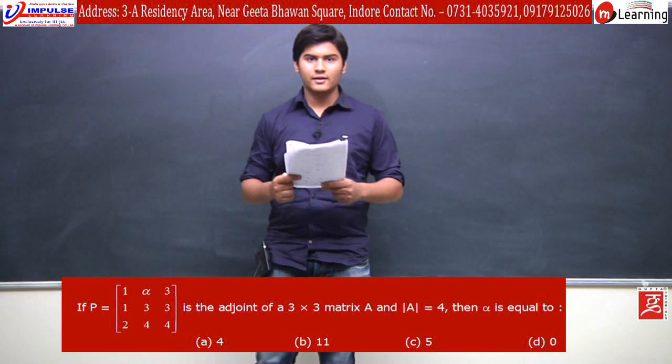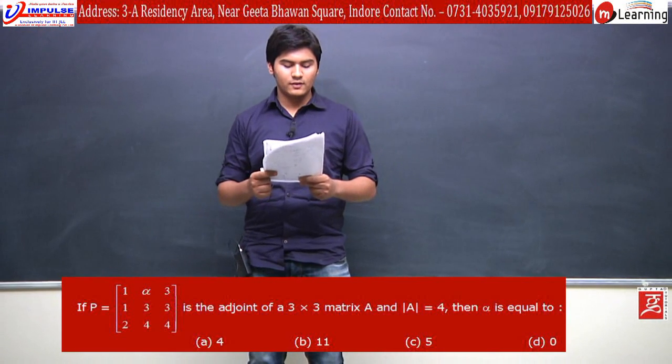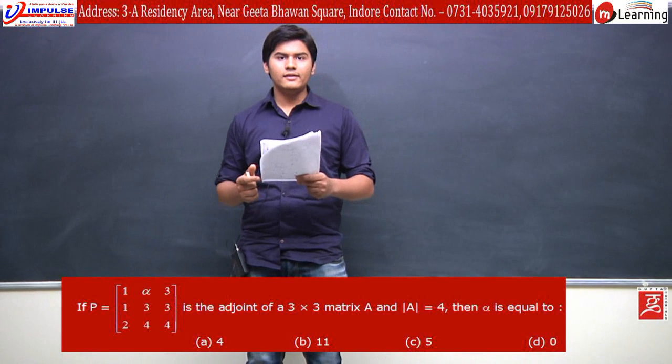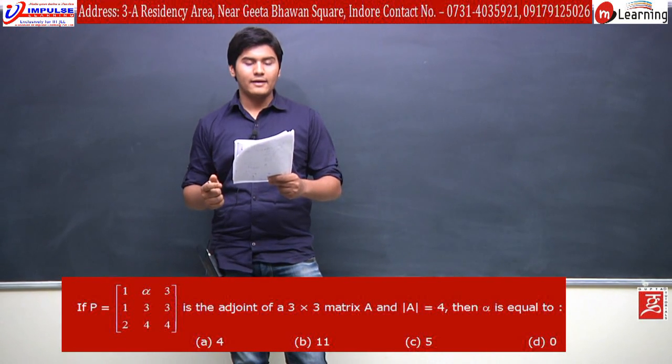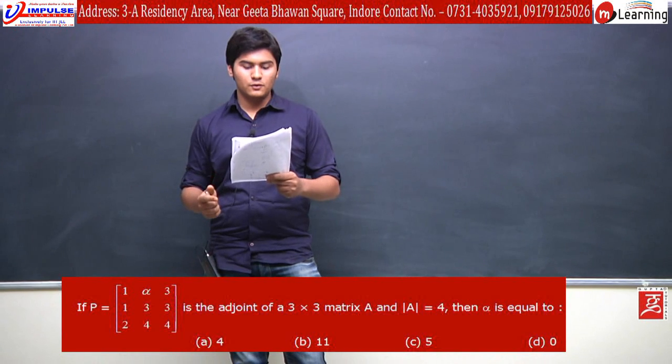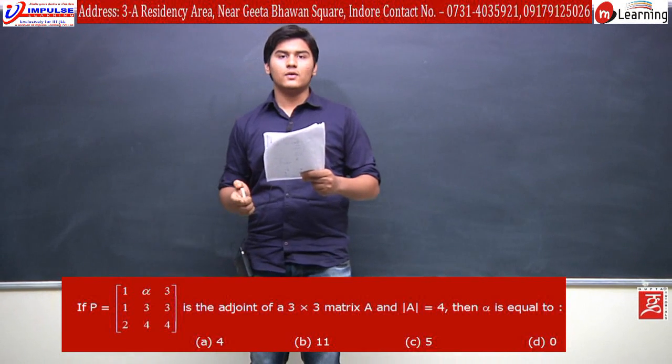Now, next question. If P is equal to the given matrix which is the adjoint of a 3 by 3 matrix A, and determinant A is equal to 4, then alpha is equal to: